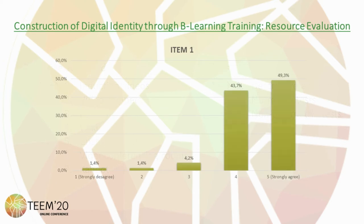As regards to the first item, 49.3% of the students strongly agree with the technological resources' ease of use. 43.7% agree, and 1.4% state that they disagree, with this figure being repeated for students that strongly disagree with this item.